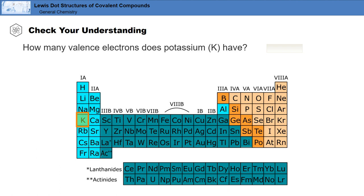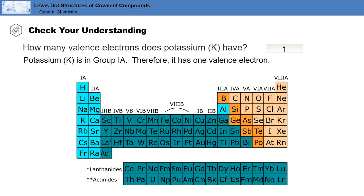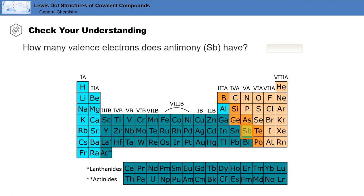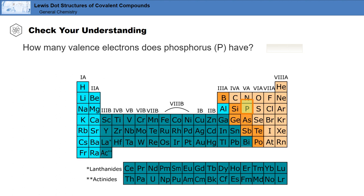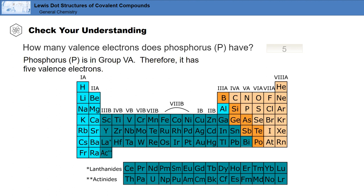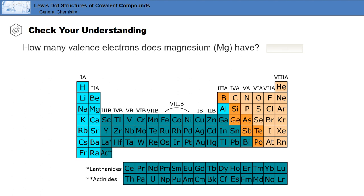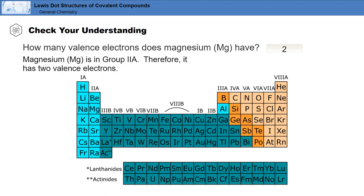How many valence electrons does potassium have? Potassium is in group 1a, therefore it has one valence electron. How many valence electrons does antimony have? Antimony, Sb, is in group 5a, therefore it has five valence electrons. How many valence electrons does phosphorus have? Phosphorus is in group 5a, therefore it has five valence electrons. Finally, how many valence electrons does magnesium have? Magnesium is in group 2a, therefore it has two valence electrons.